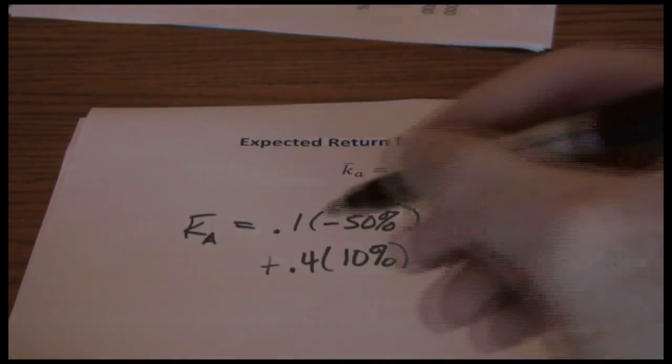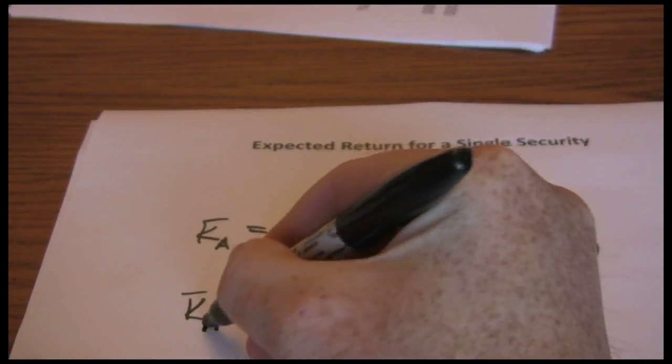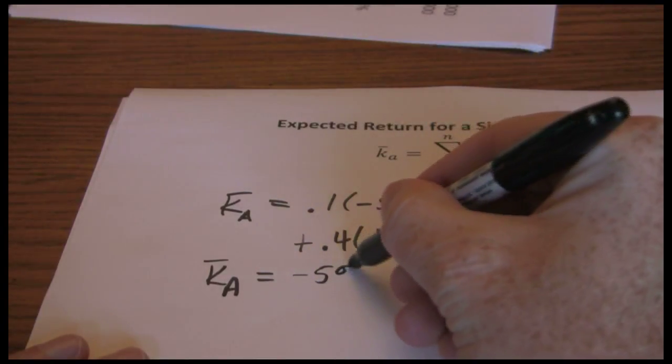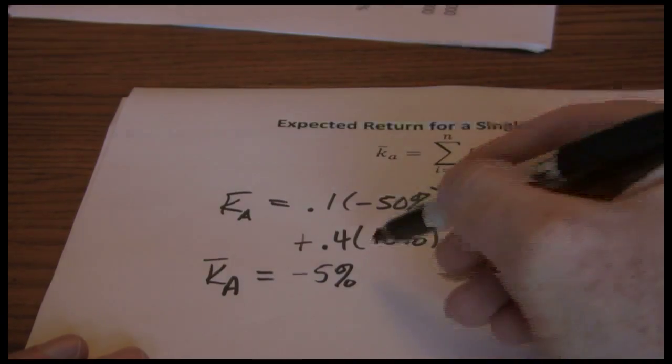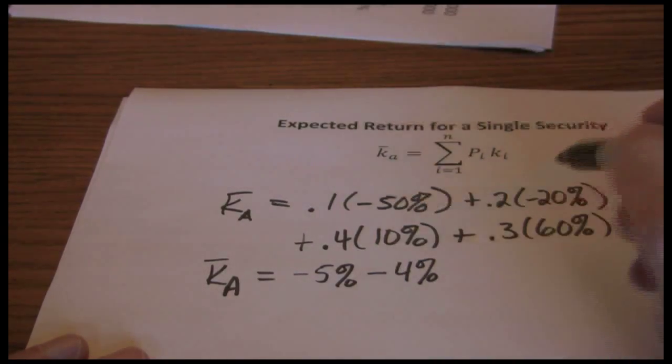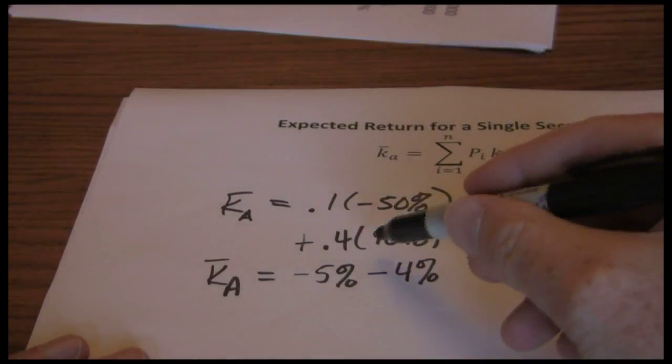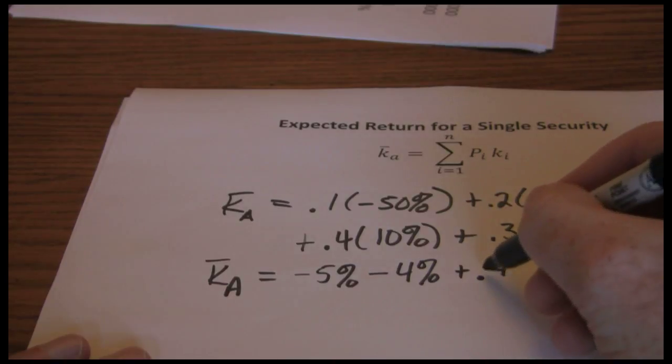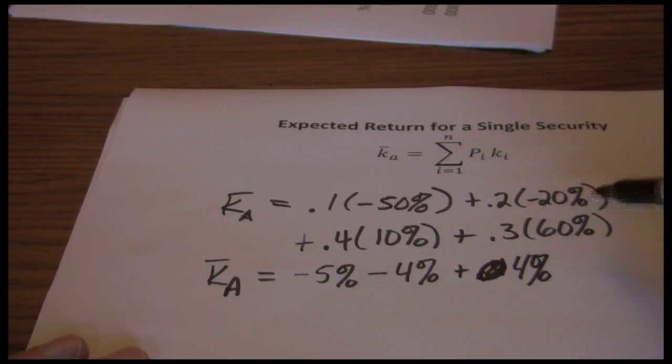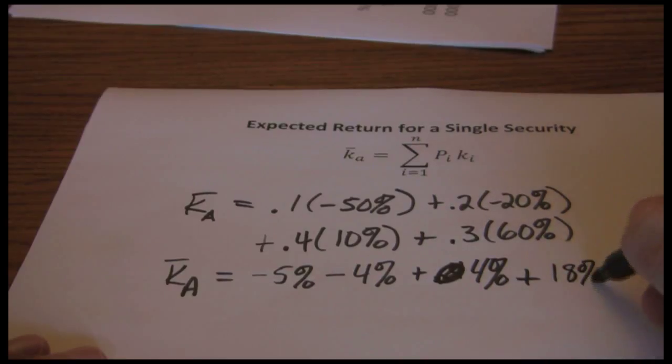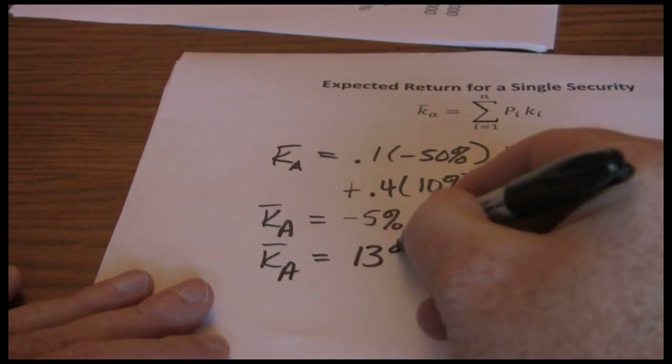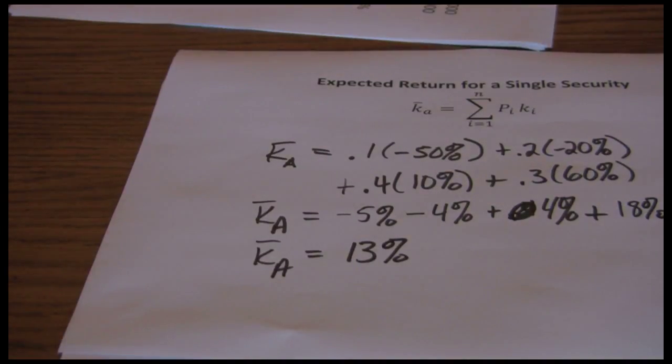Now we can just work through the math there. Expected return for stock A, .1 times negative fifty, negative five percent, .2 times negative twenty, negative four percent, positive and negative is the same as subtraction. .4 times ten is four percent, and lastly .3 times sixty is eighteen percent. So our final answer, our expected return for this stock is thirteen percent.